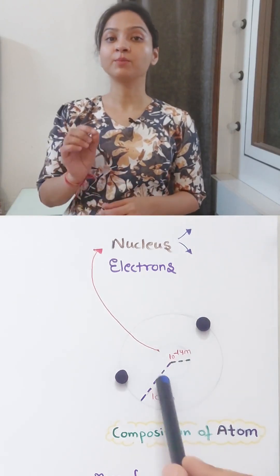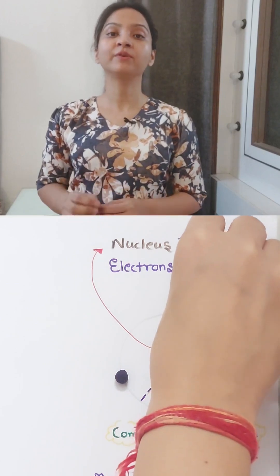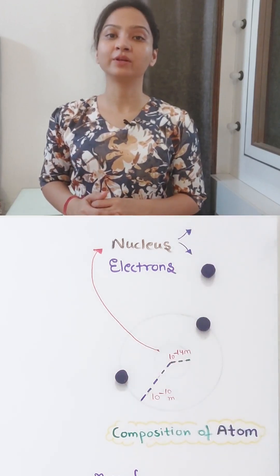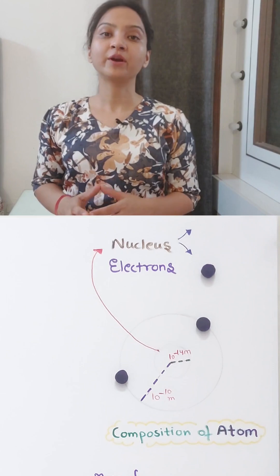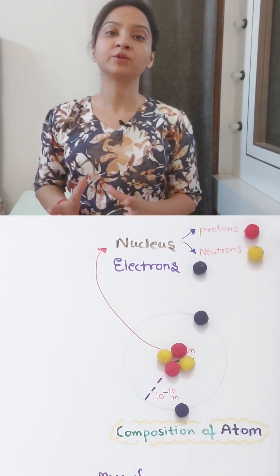You know that an atom consists of a small central core called the nucleus and a surrounding cloud of electrons moving in specific orbits around the nucleus. The nucleus further comprises of protons and neutrons, and it is in the nucleus that most of the atomic mass resides.